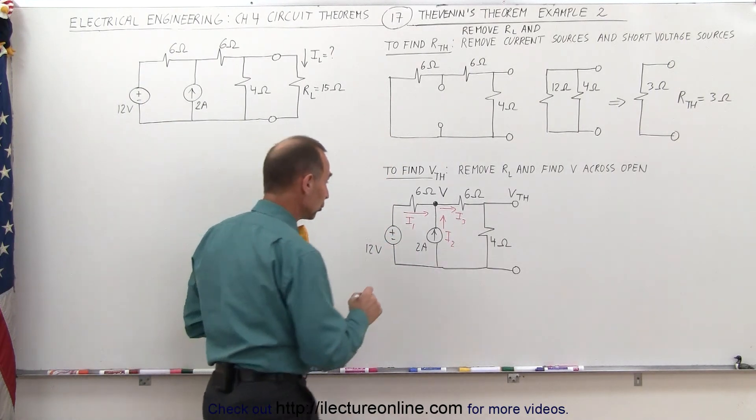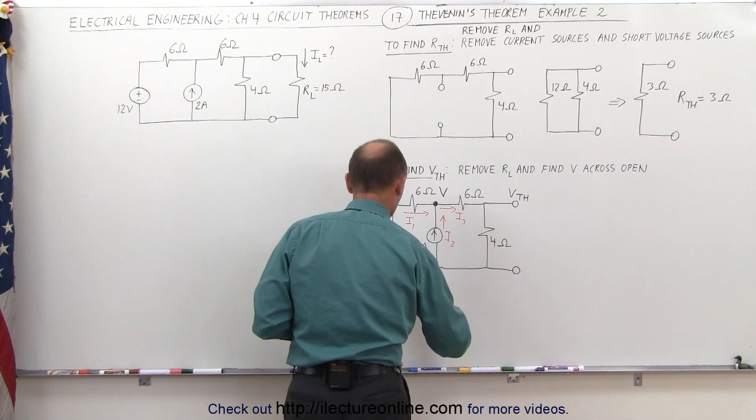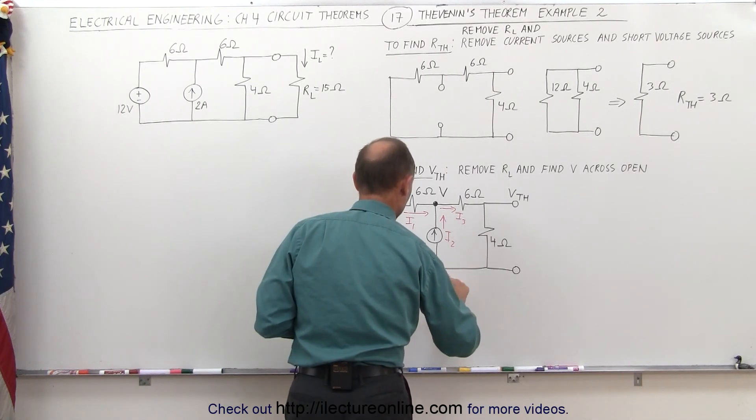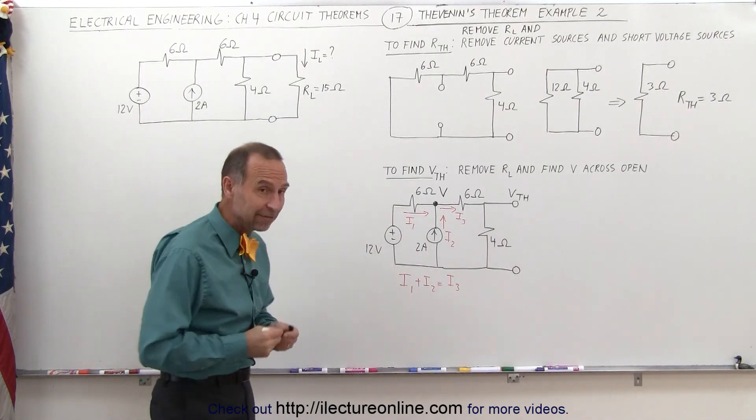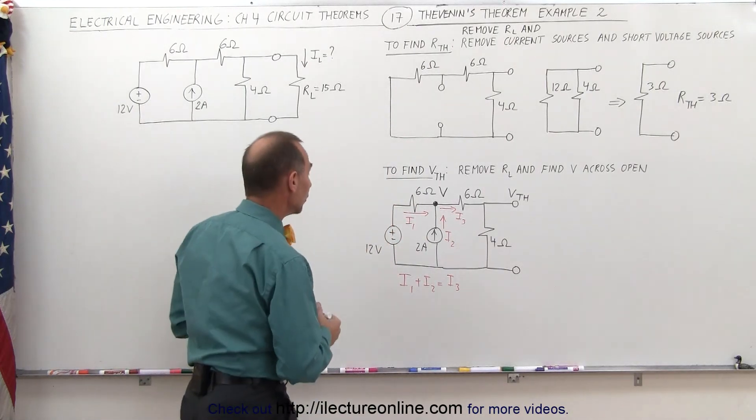So using Kirchhoff's rules, we can say that I1 plus I2 is equal to I3. All the currents entering equal all the currents leaving. Now, equating those,